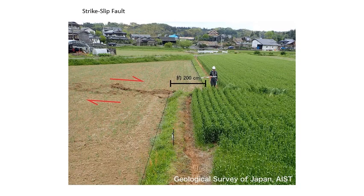Remember we have another kind of fault called a strike-slip fault. Remember the angle of strike — we're talking about the horizontal dimension. We can see the offset in this rice field of a strike-slip fault, showing lateral movement.